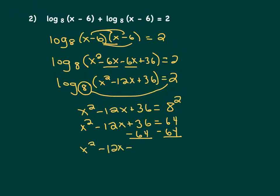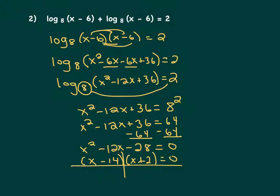Remember, if something doesn't factor you can always use the quadratic formula, but this does factor. We need two numbers that multiply to negative 28 and add to negative 12 — that would be negative 14 and positive 2. So our factors are (x minus 14) and (x plus 2). Making a t-chart, we get x equals positive 14 and x equals negative 2.